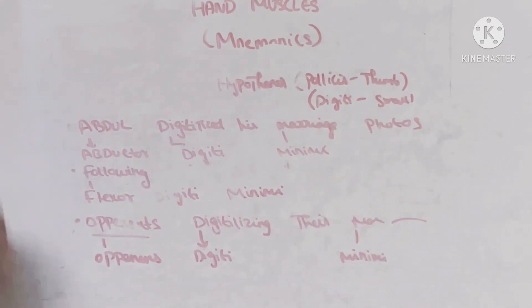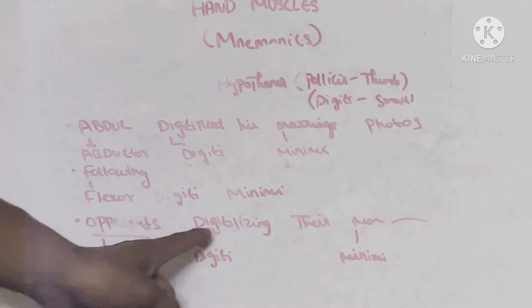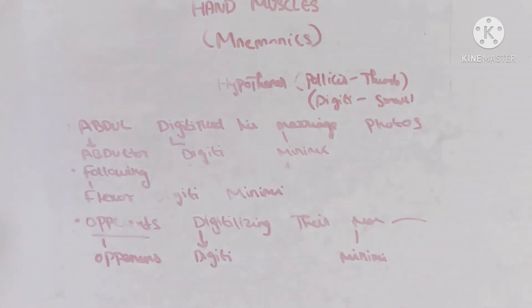So just remembering this sentence: 'Abdul digitalized his marriage photos following opponents digitalizing their marriage photos,' we can remember the three muscles of hypothenar.